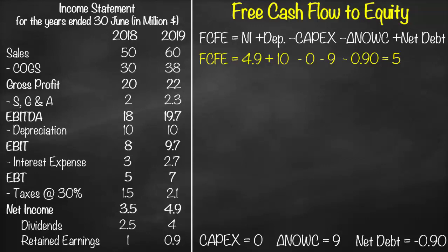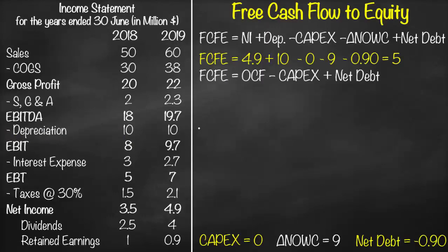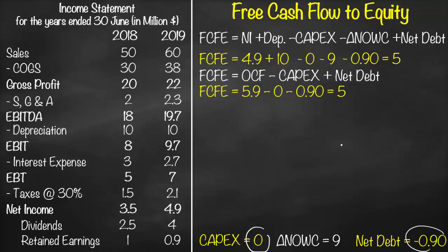Another formula for free cash flow to equity uses operating cash flow: FCFE equals operating cash flow minus CapEx plus net debt. We get operating cash flow from the statement of cash flows, which has three categories: net cash flow from operations, investing, and financing. Net cash flow from operations is 5.9. So FCFE equals 5.9 minus CapEx of zero plus net debt of negative 0.9, which again gives us 5.